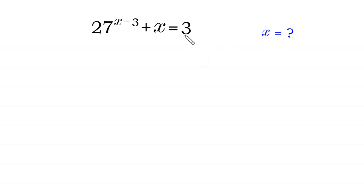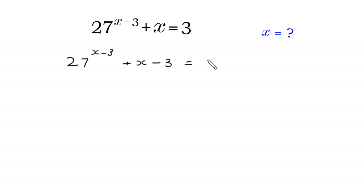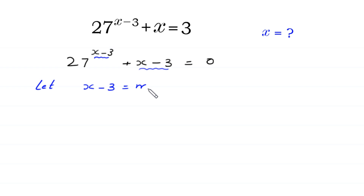First of all, we move this 3 to the left side. 27 to the power x minus 3 plus x — this plus 3 becomes negative 3 on the left side — is equal to 0. Here we have x minus 3 in both places, so we let x minus 3 equal to m and substitute m into this equation. The equation becomes 27 to the power m plus m is equal to 0.